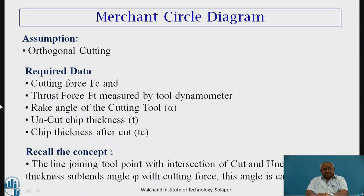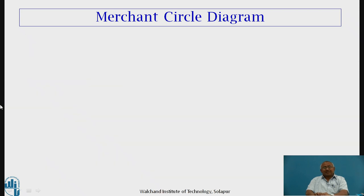The rake angle of the cutting tool, denoted by alpha, is recorded from the specification of the cutting tool employed for orthogonal cutting. The uncut chip thickness, denoted by T, and chip thickness after cut, denoted by C, are also to be recorded. Now we will begin the procedure for construction of the merchant circle diagram.